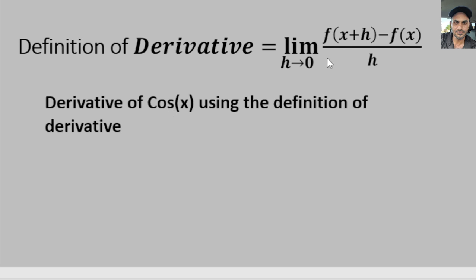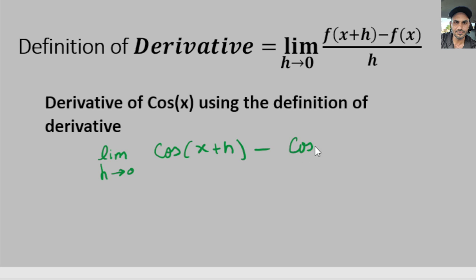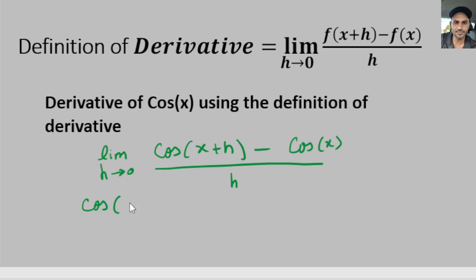I'm going to plug this function into the definition of derivative form. So we get the limit as h goes to zero of cosine of x plus h minus cosine of x over h. Now I'm going to use the property of cosine of a plus b to expand this.